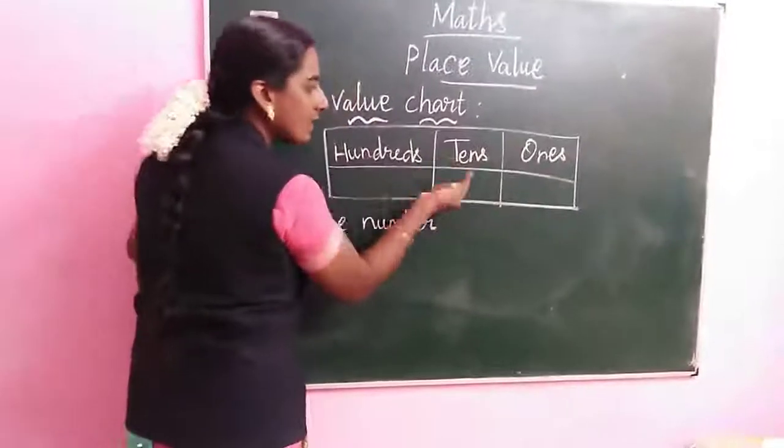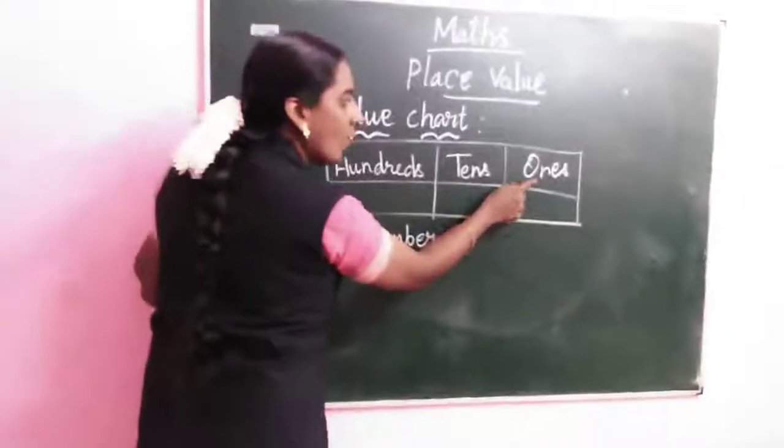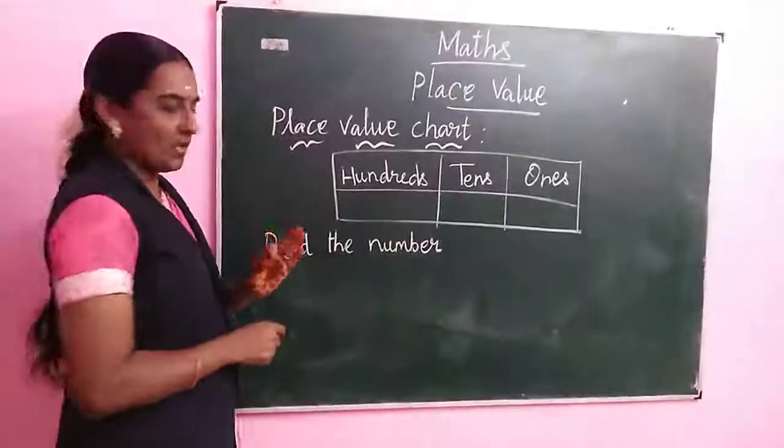See that: 1, 10, 100. What is that? 1, 10, 100. Three place values.